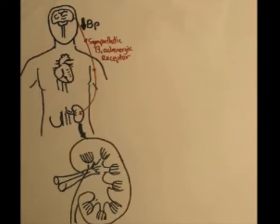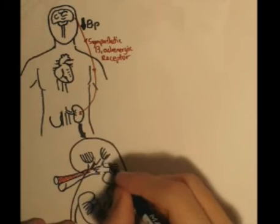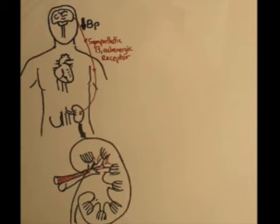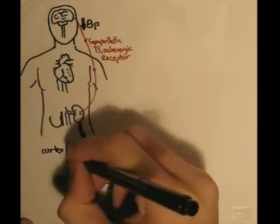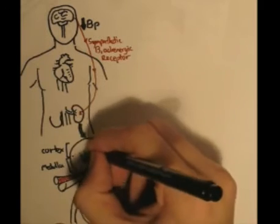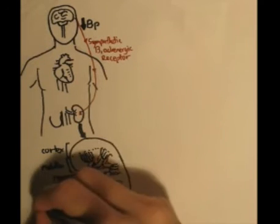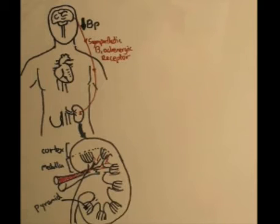Just briefly going over the anatomy of the kidneys. The outer part of the kidneys is called the cortex, and the inner is known as the medulla. The triangle looking things in the medulla are called pyramids, hence the shape.